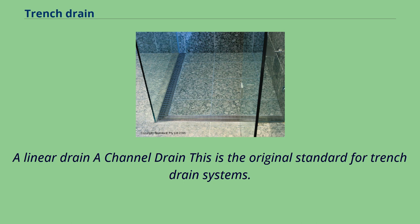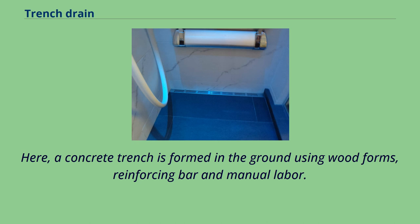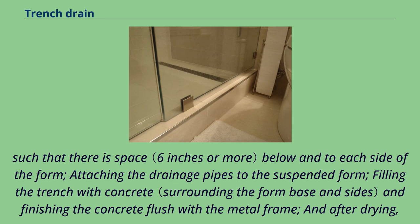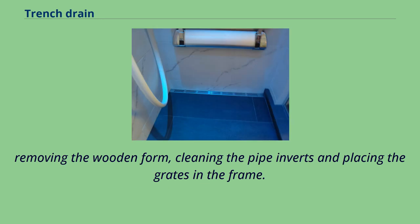The cast-in-place method is the original standard for trench drain systems. A concrete trench is formed in the ground using wood forms, reinforcing bar, and manual labor. It involves several steps: building a wooden mold to form the channel, attaching metal frames to the top edge of the form, suspending the form inside the trough so there is space below and to each side, attaching the drainage pipes to the suspended form, filling the trench with concrete and finishing it flush with the metal frame, and after drying, removing the wooden form, cleaning the pipe inverts, and placing the grates in the frame.